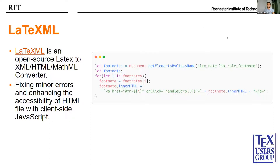LaTeXML renders a highly accessible HTML and it overcomes some of the issues related to figures and equations that we previously faced. We also tried to further improve the accessibility and appearance of the rendered HTML by adding client-side JavaScript. Here's a code snippet for making the footnotes accessible — the footnotes rendered from LaTeXML were previously inaccessible and only visible on hover state. We also fixed other minor issues with the help of JavaScript and CSS.